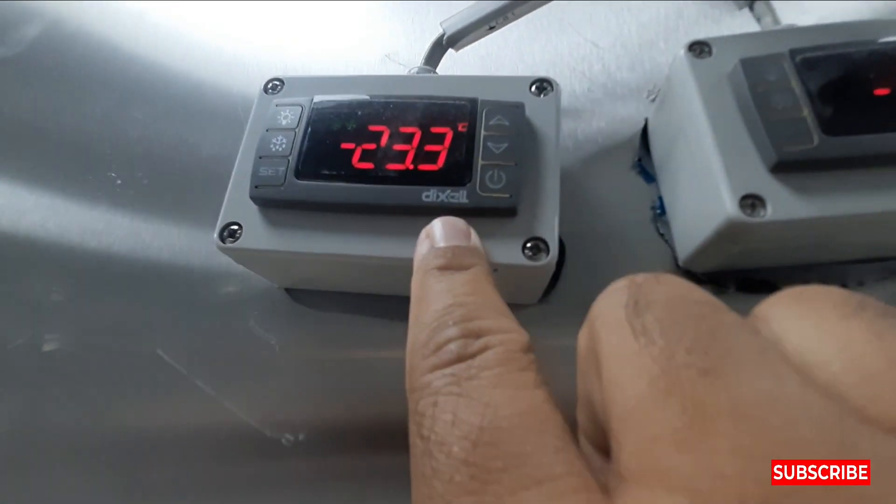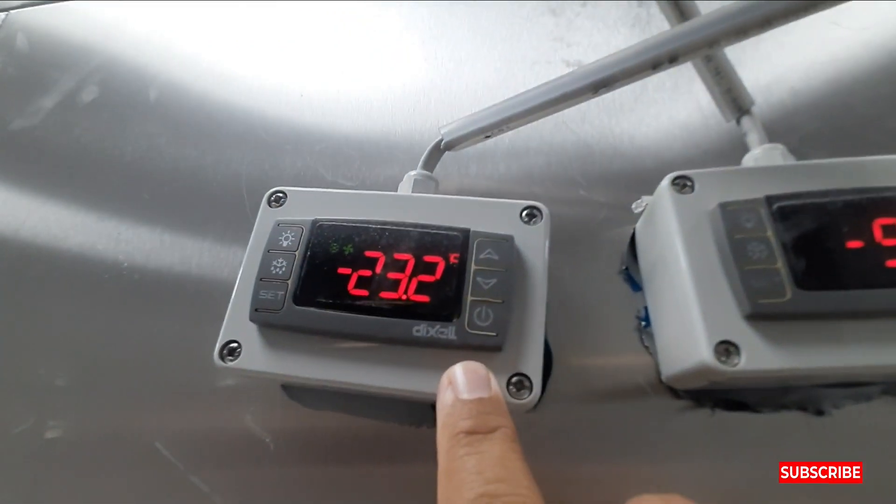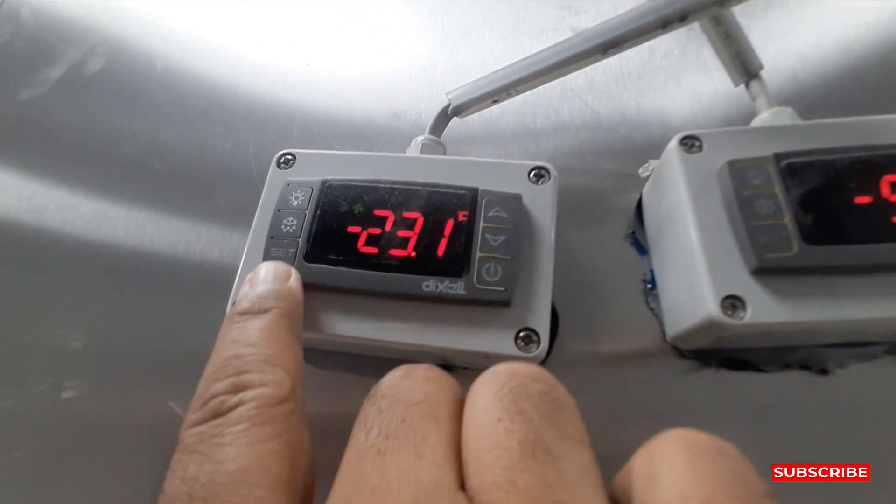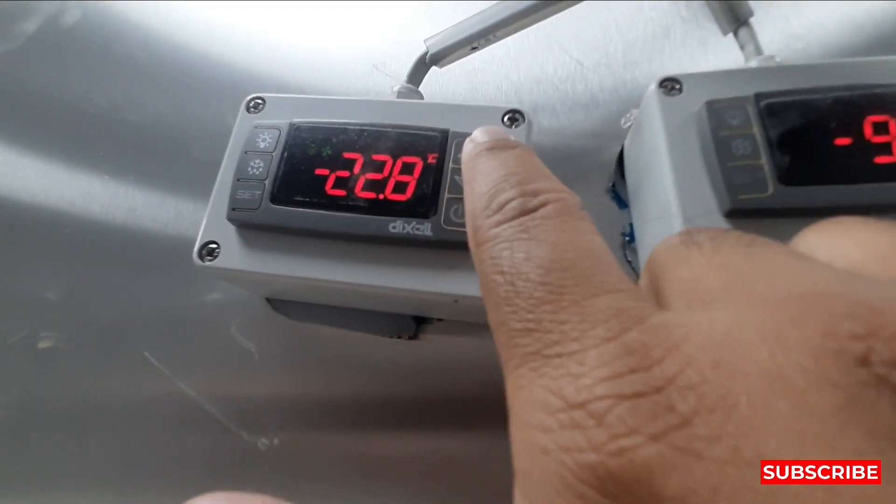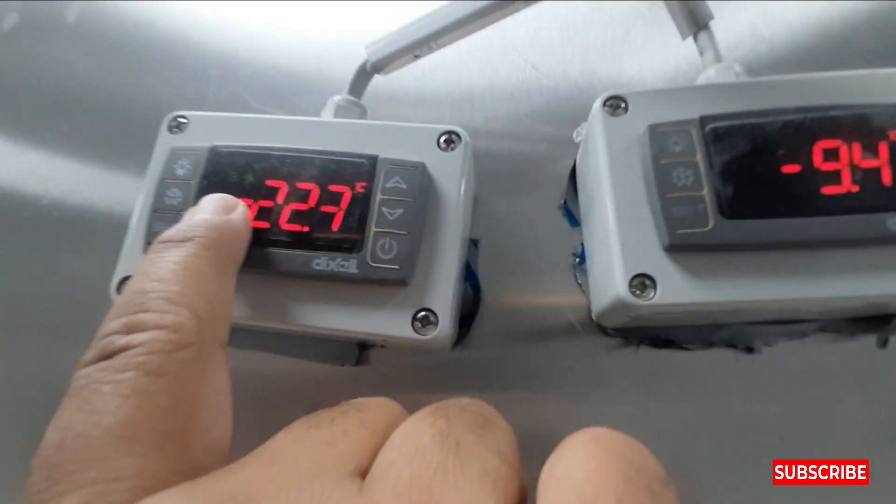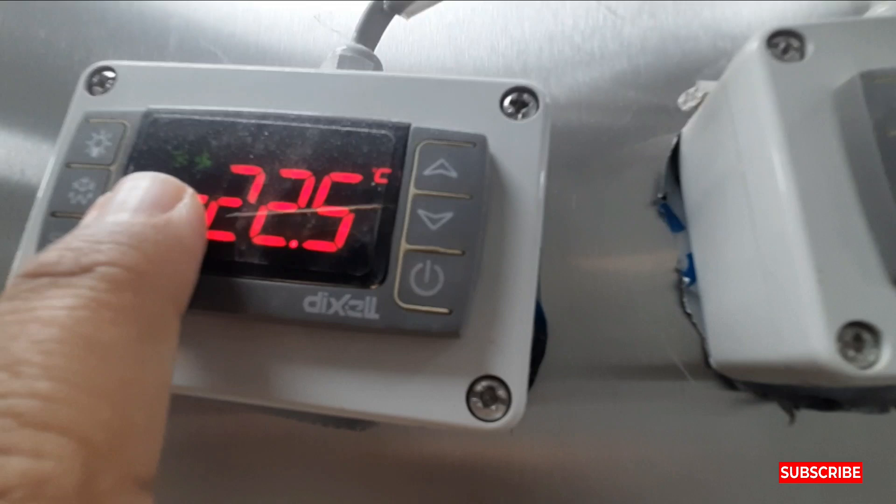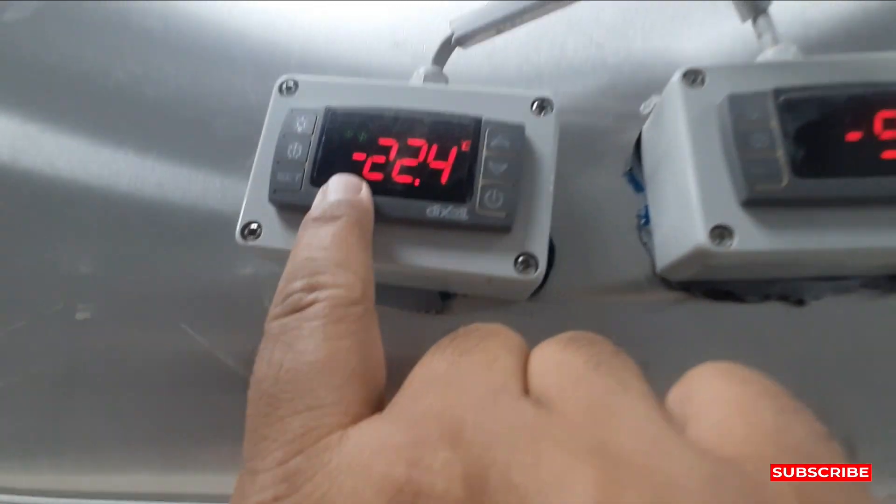This is the Dixiel digital temperature meter we are using. You can see the temperature is going minus 22 because ice came inside on the evaporator coil. When ice comes on the evaporator coil, we need to defrost it.